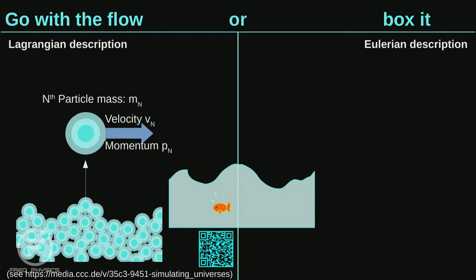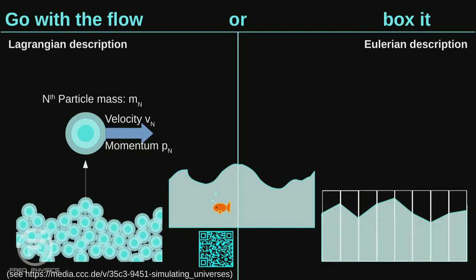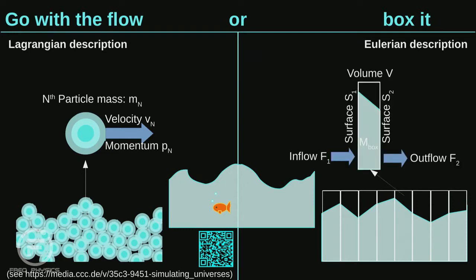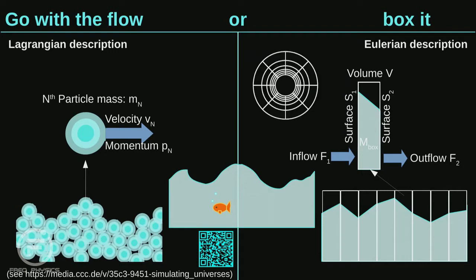However, there's a second way — instead of going with the flow of the particles, we just box it: we create a grid. In this grid, each cell has a certain filling level and a slope. We look at what flows in and what flows out through the surfaces of each box, tracking the volume or mass within it. Since we're usually working with a disk system, we use ring-shaped boxes that already resemble a disk, and measure what passes through each cell's surface.